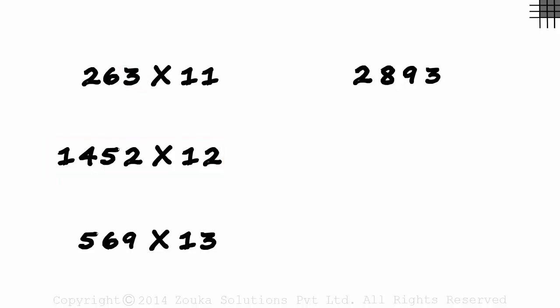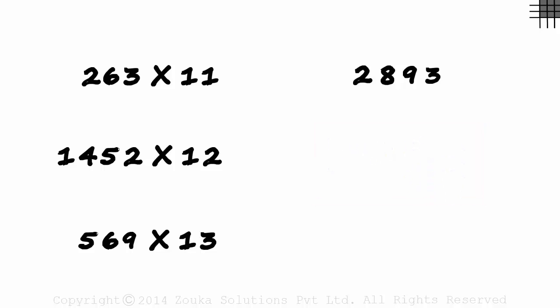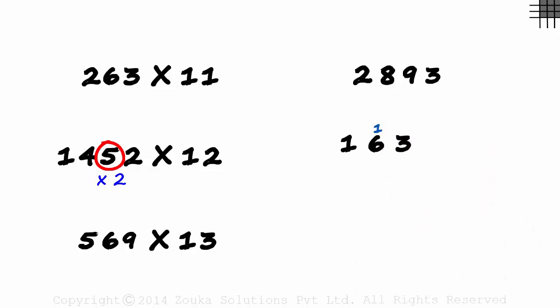1452 times 12. We use the multiplication by 12 shortcut. First digit 1 as is. 1 times 2 plus 4 is 6. 4 times 2 plus 5 is 13. 5 times 2 plus 2 is 12. And the last digit 2 is multiplied with 2 to get 4.